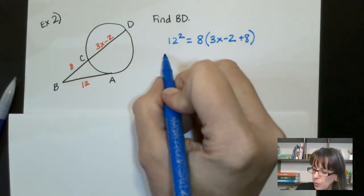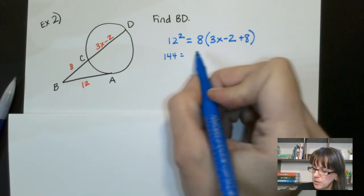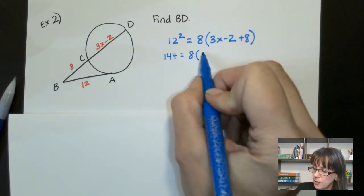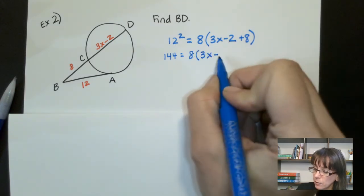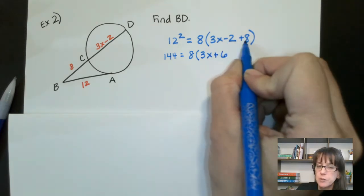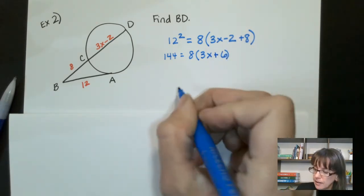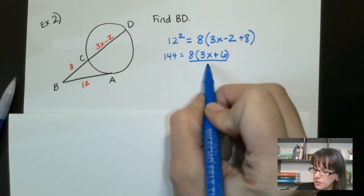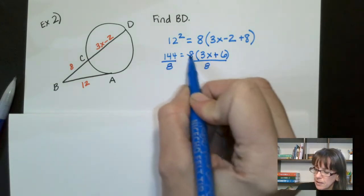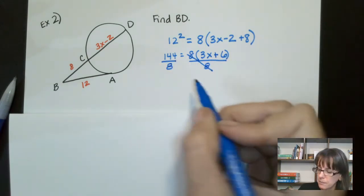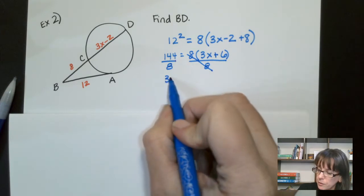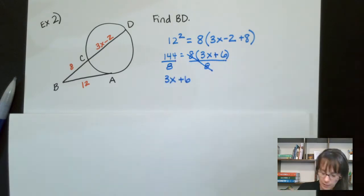So that's going to be 144 equals 8 times 3X plus 6. Negative 2 and 8 will give us 6. Let's go ahead. I could distribute that 8, but I can also divide and that'll make it a little easier. And I'm going to flip it around as I do the same things as I divide too.